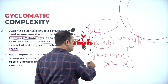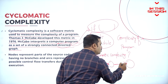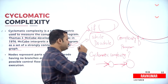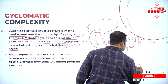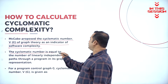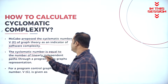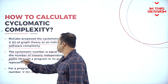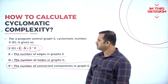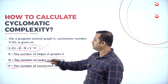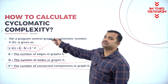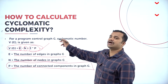A directed graph represents a cycle of nodes which are traversed at certain points of time, so it is called a cycle of graph. The cyclomatic number is equal to the number of linearly independent paths through a program in its graph representation. The cyclomatic complexity is defined by the formula V(G) = E minus N (edges minus nodes) plus 2 times P.